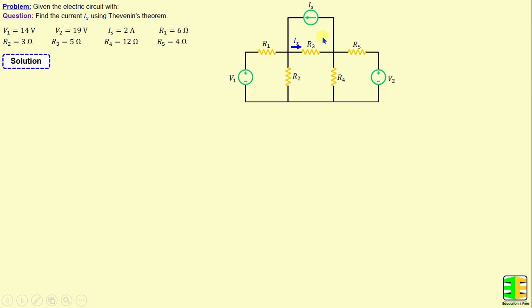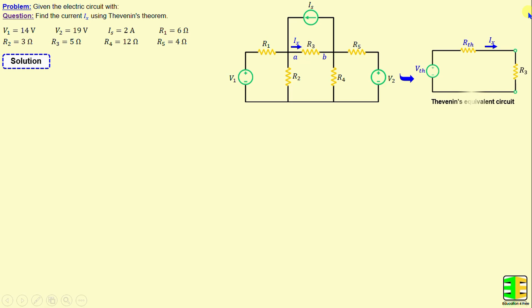Let's move on to the solution by applying Thevenin's Theorem between terminals A and B. We can replace this circuit with a voltage source in series with a resistor, which will be denoted as VTH and RTH. In our example, RTH is connected in series with R3, which plays the role of the load.